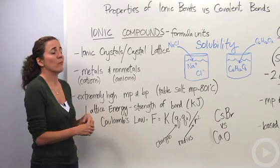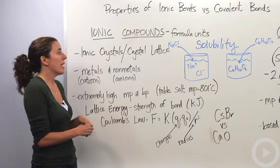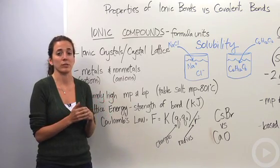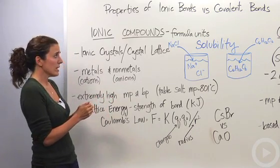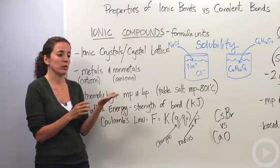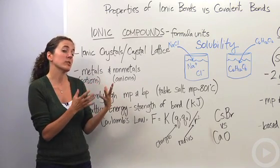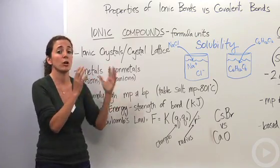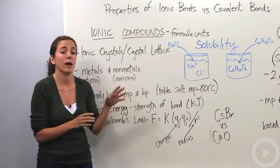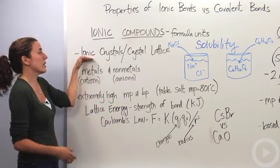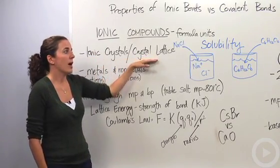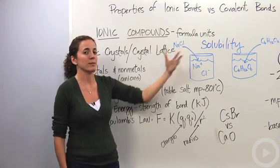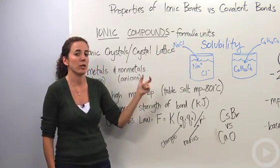Ionic compounds are called formula units because they are actually a ratio of ions - charged particles held together in a crystal structure. You can't have just one Na and one Cl; it's actually going to be a ratio of Na+ ions and Cl- ions. We call these structures ionic crystals or lattice crystals, and one unit is called a formula unit, which is just the lowest ratio of ions.